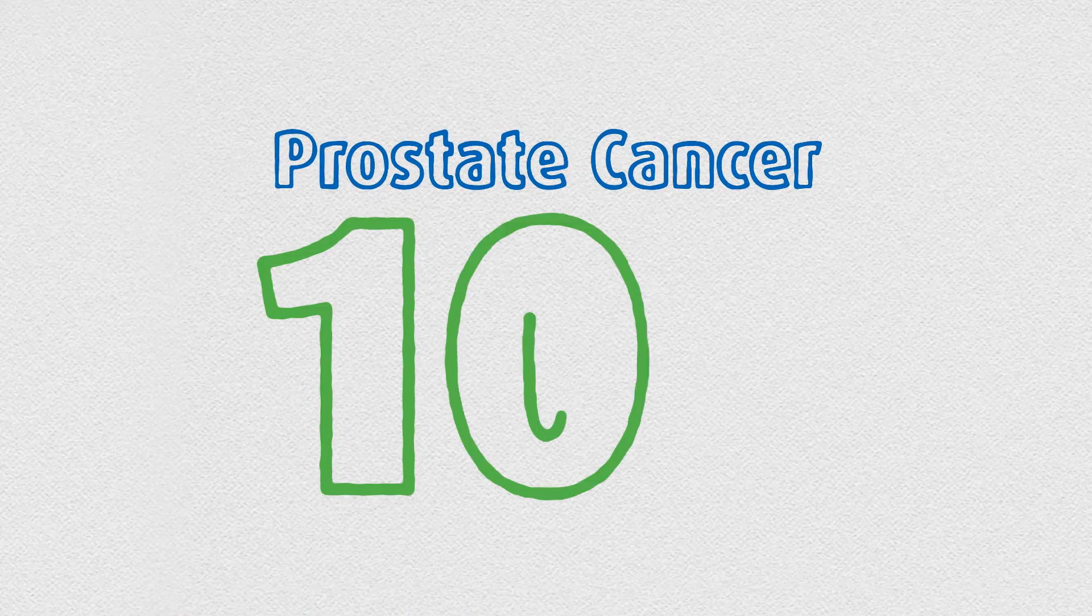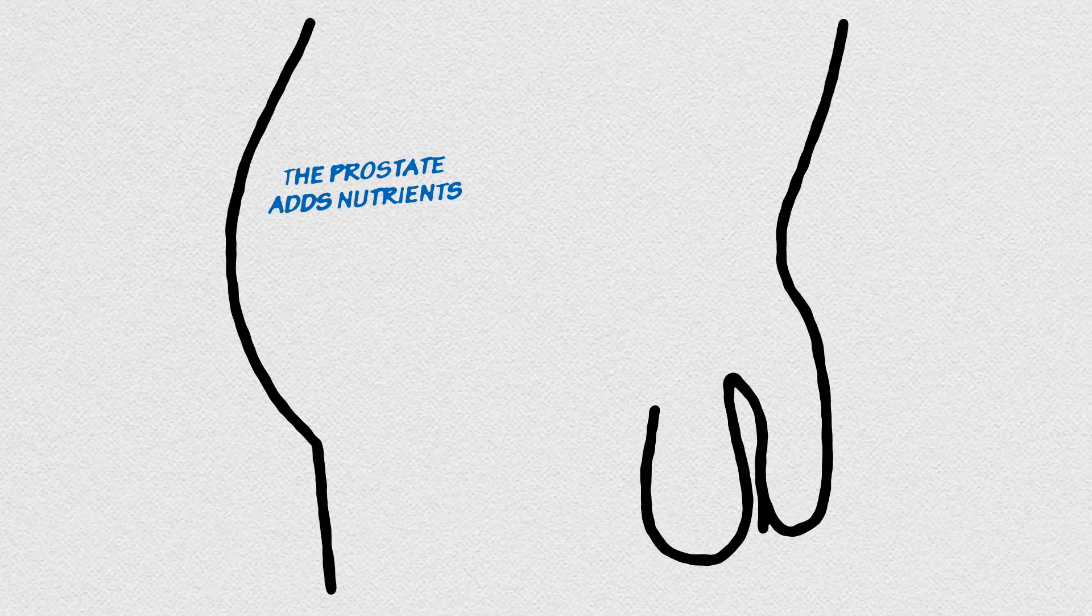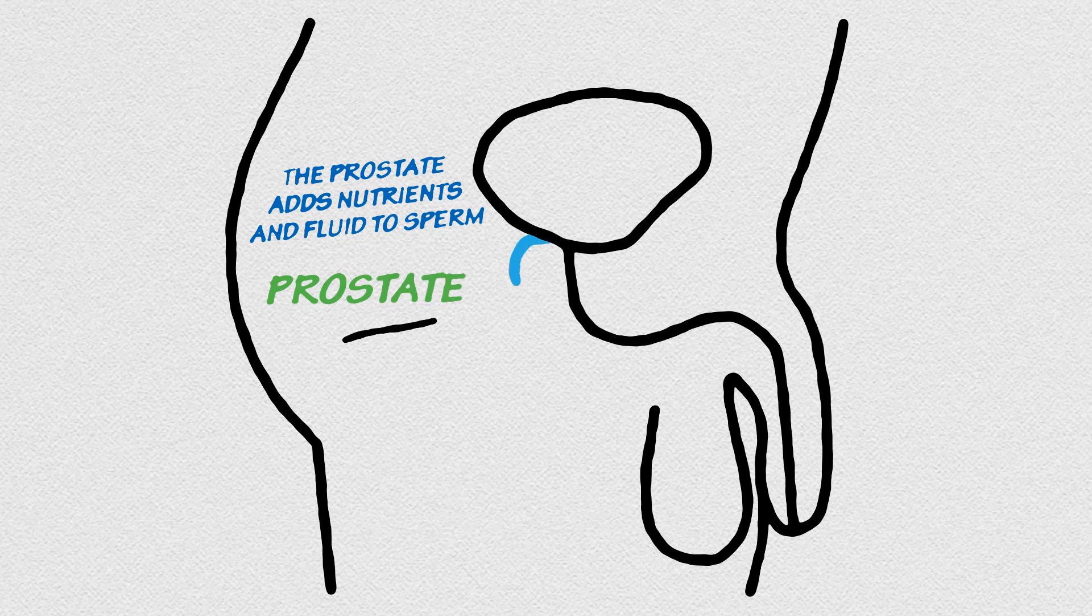Welcome to Prostate Cancer 101. The prostate is the part of the male reproductive system that adds nutrients and fluid to sperm. Located in front of the rectum, just below the bladder, it's normally the size of a golf ball.